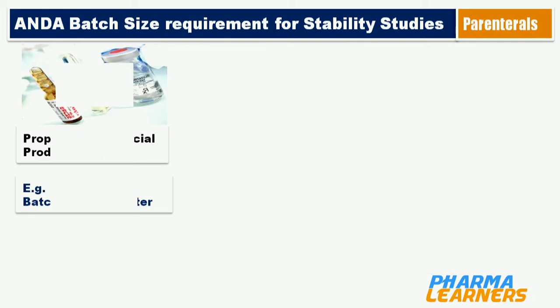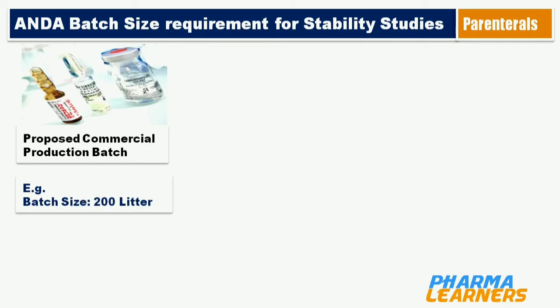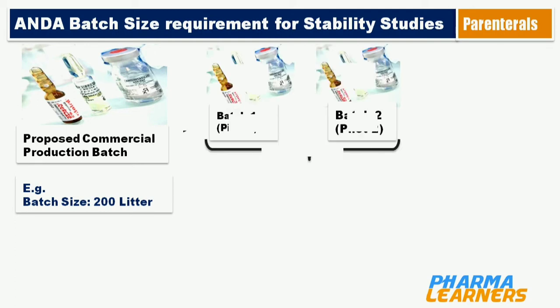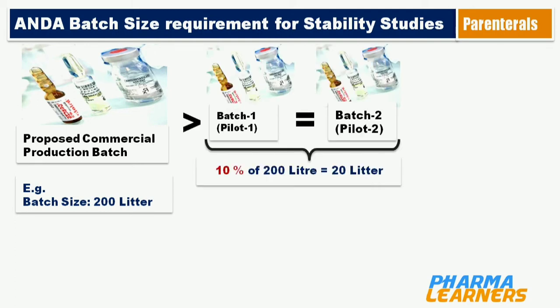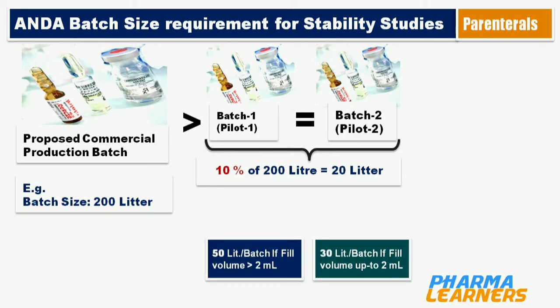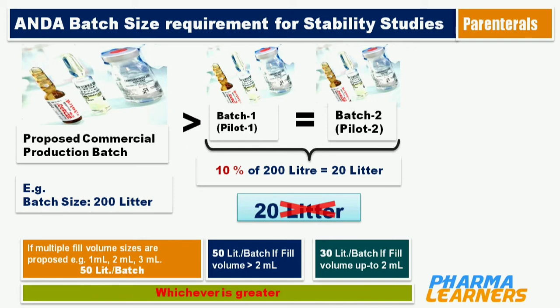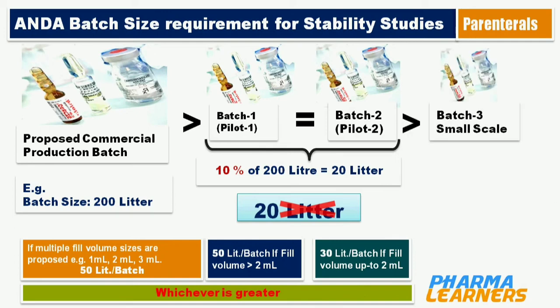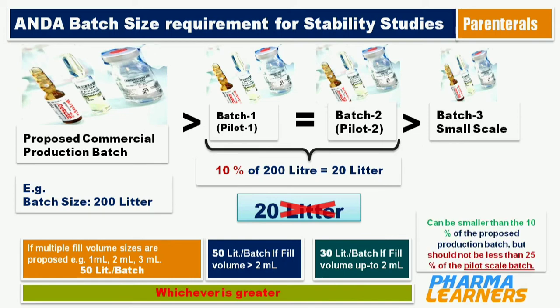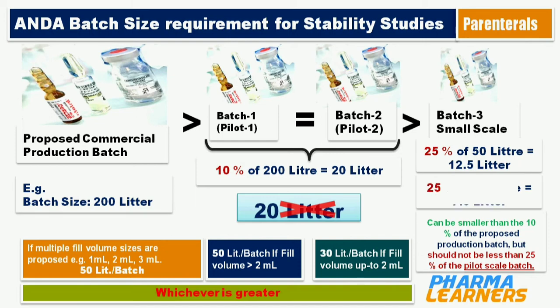Let's take one more example. If the proposed commercial batch size is 200 liters, then 10% of 200 liters is 20 liters. Here, 20 liters is less than the minimum quantities described in the guidance, so the minimum quantity of the 2 pilot batches should be either 30 liters or 50 liters based on the fill volumes. For the third batch: if pilot batch size is 50 liters, the third small-scale batch is 25% of 50 liters, which is 12.5 liters. If pilot batch size is 30 liters, the third batch is 25% of 30 liters, which is 7.5 liters.